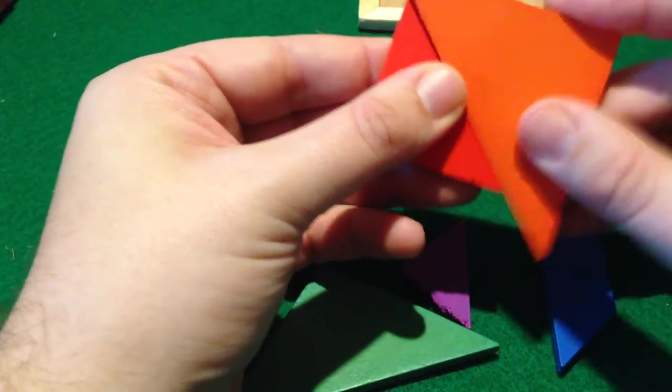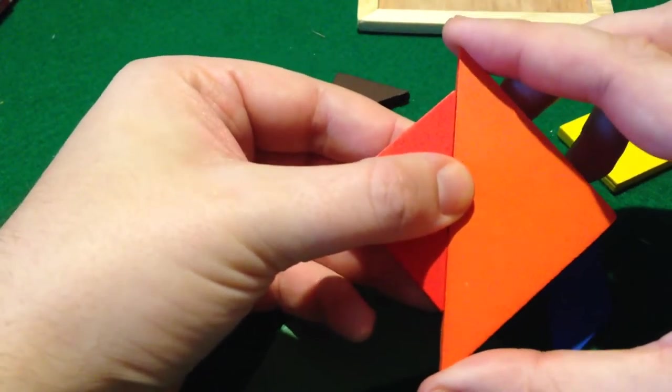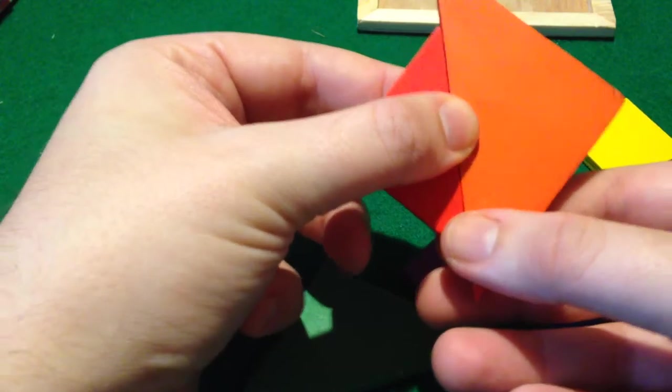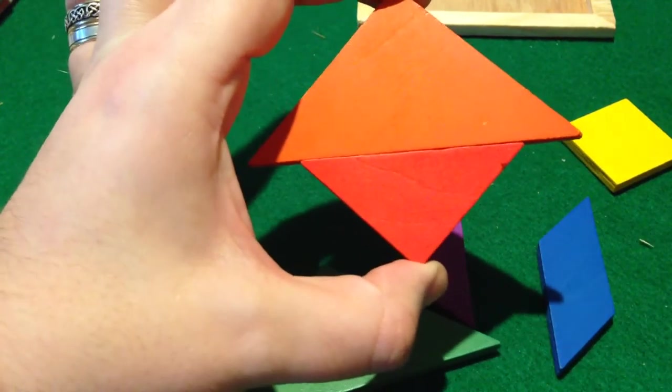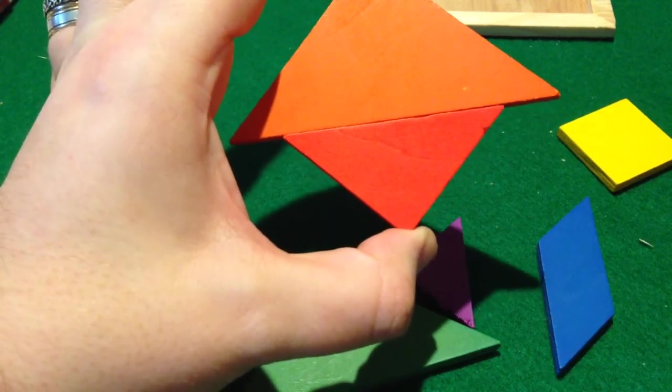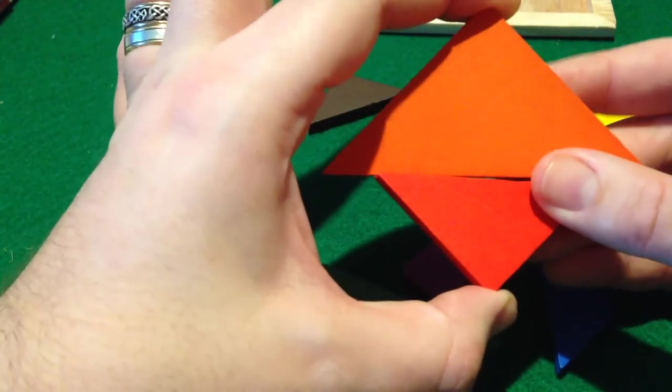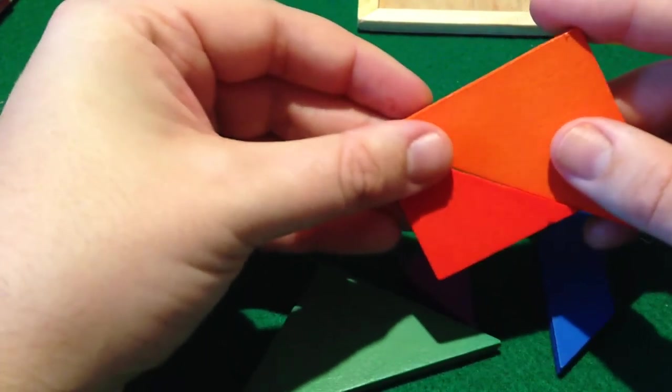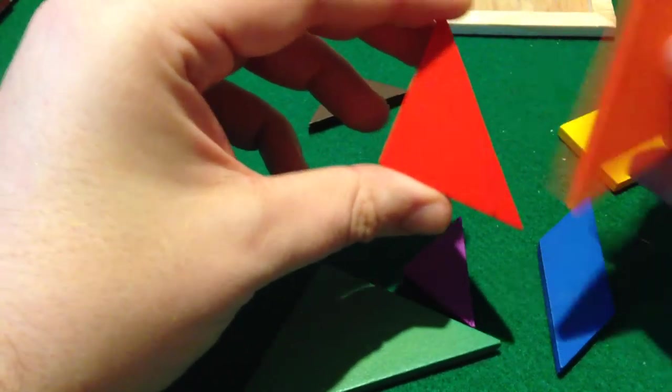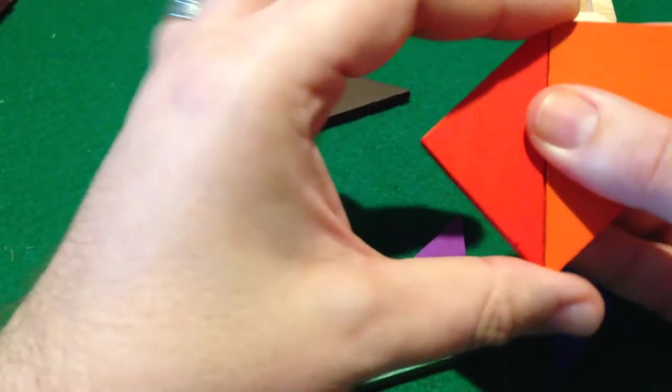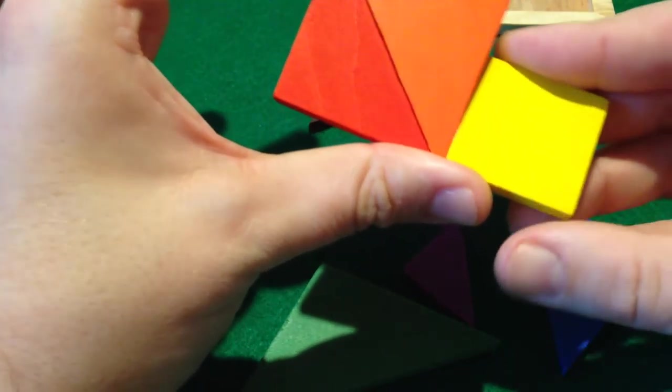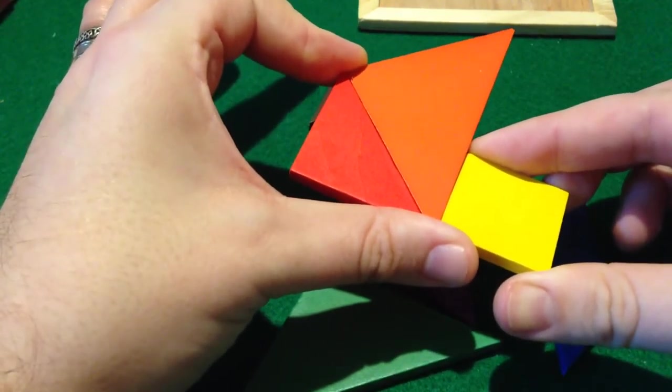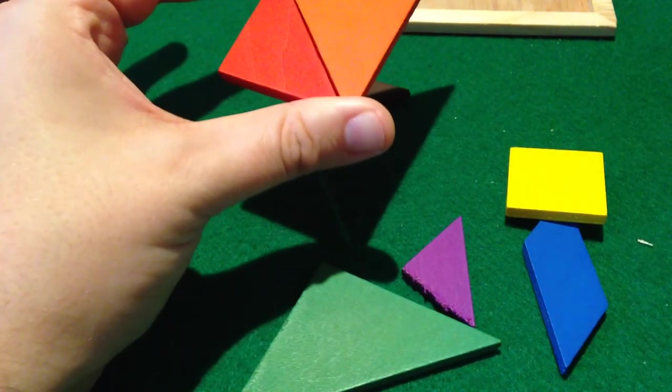So anyway, Tangrams. That's all I have to say about that today. I suggest you get some if you see them nice and cheap, I'd say on eBay. A pound, including delivery from China. And it's just a nice little thing to have. So if you've got children or you just like playing about with puzzles and shapes, then good luck to you. And enjoy. That's it for now. Bye bye.